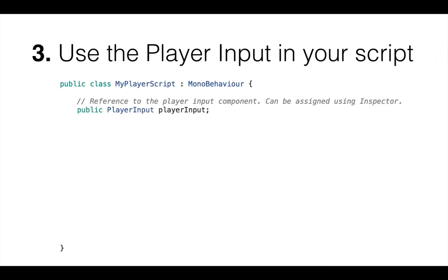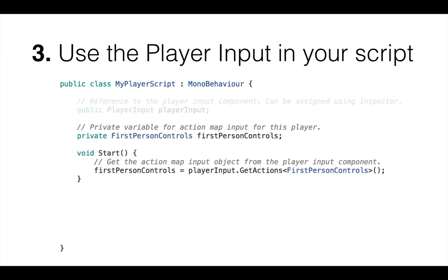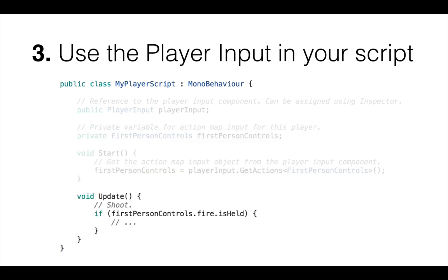The third step is for your script that handles player input. You need a public field of type PlayerInput to reference the player input component, and a field for the specific action map you're using. Each action map in Unity automatically creates a corresponding class. So if you have an action map called FirstPersonControls, there's now a FirstPersonControls class. In the Start method you can get the FirstPersonControls object from the player input component, and access actions like .fire to check if it's held down, just pressed, just released, and so on. This fully supports IntelliSense — no string handling required.